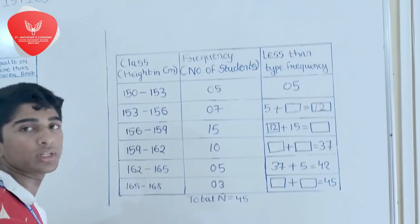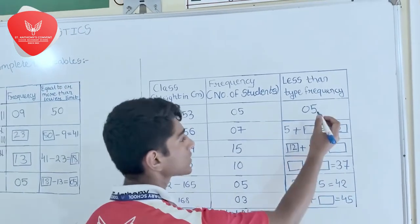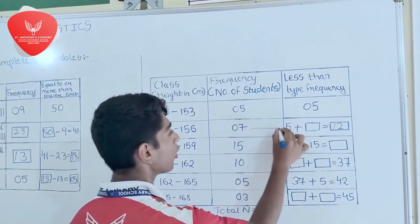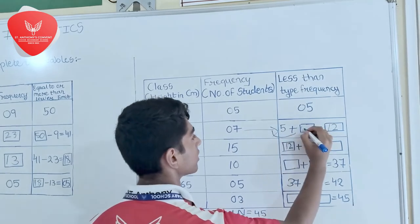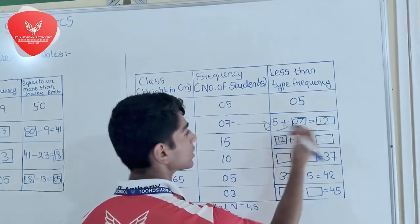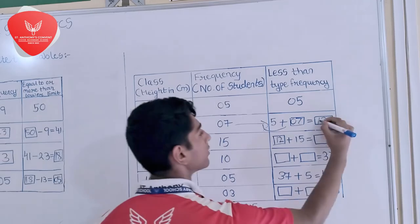Now we are solving the less than type frequency table. This 7 will come over here. 5 plus 7 is equal to 12.